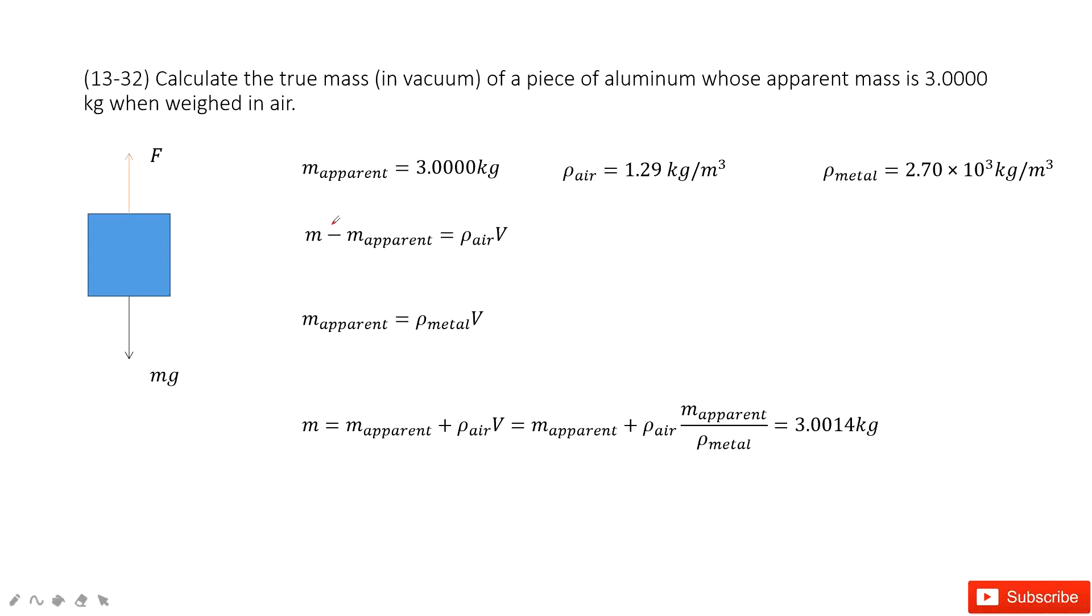So the true mass minus the apparent mass must equal to the mass of the air replaced by this aluminum. So we get this equation as there.